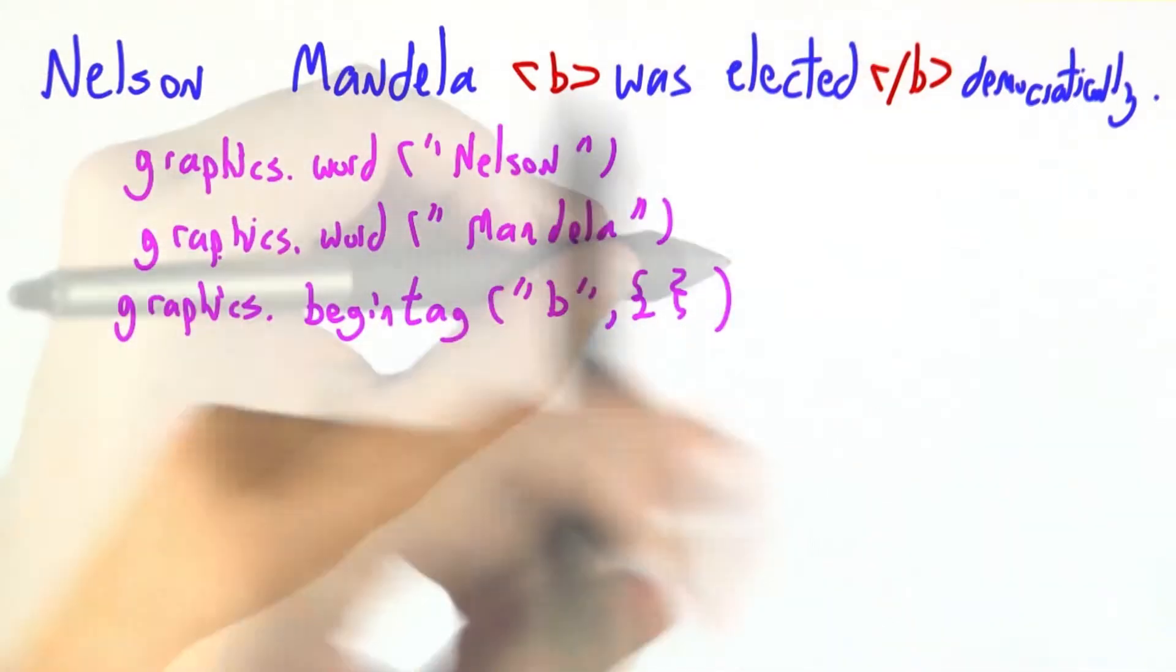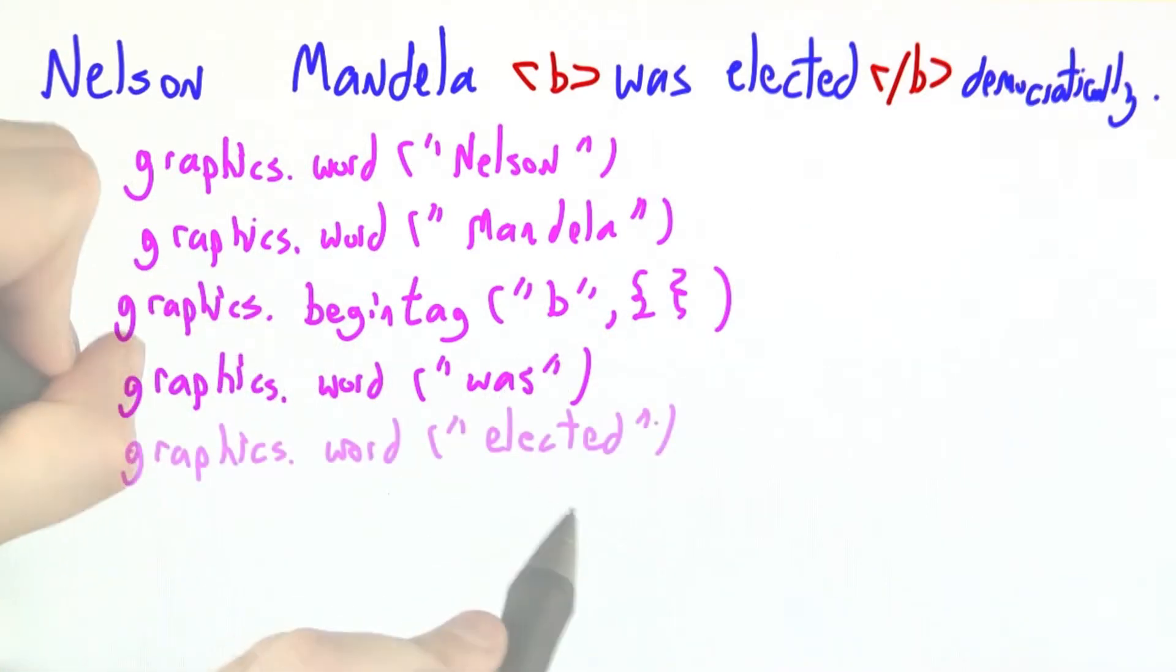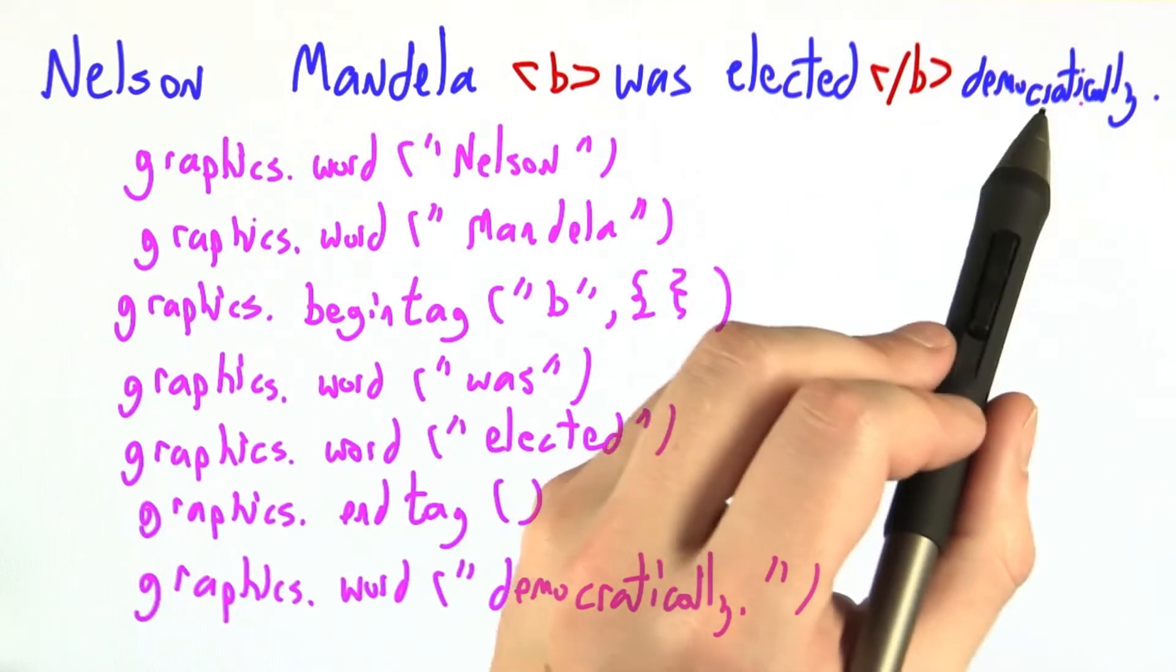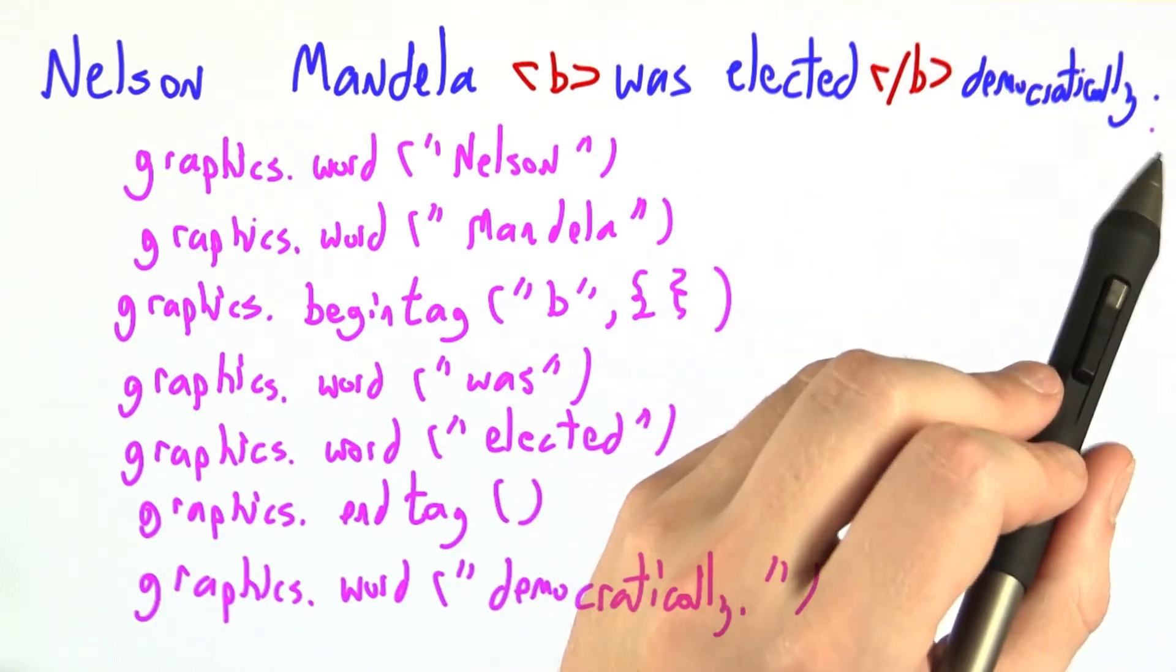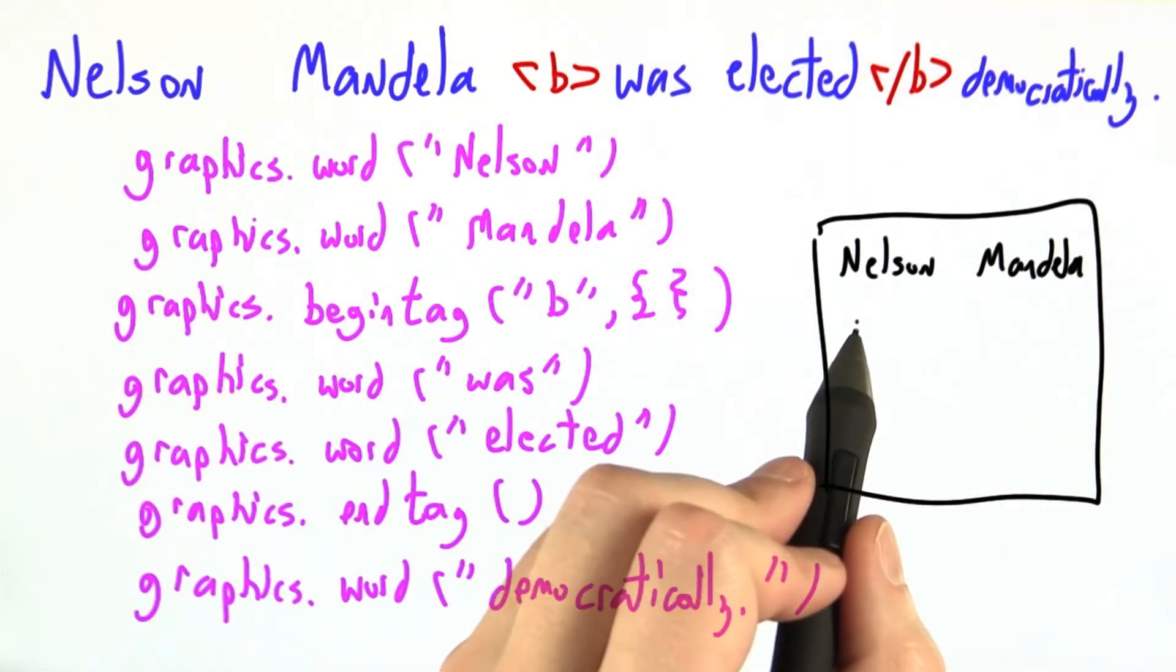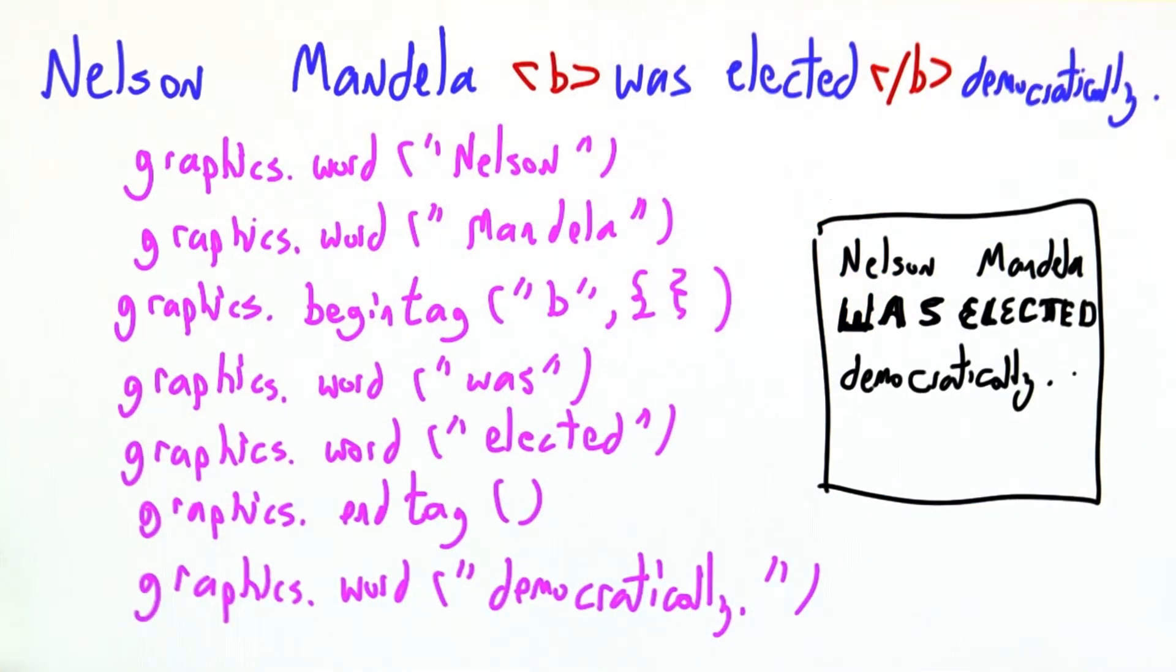You can imagine changing out your pen for something that draws in a different color. Now we instruct our graphics library to write the word was, but it's going to be bolded. Now we write the word elected, and now we're done with things in bold. So we back out of our most recent tag. Finally, we'll add the word democratically and the period. This depends a bit on how our lexer works, but remember that our definition for word was sort of anything that's not white space or angle brackets, so this period will be part of the same word. And then it will be the responsibility of our graphics library to do things like wrapping when we get to the end of the page, to decide what bold looks like, and then to display the image back to you.